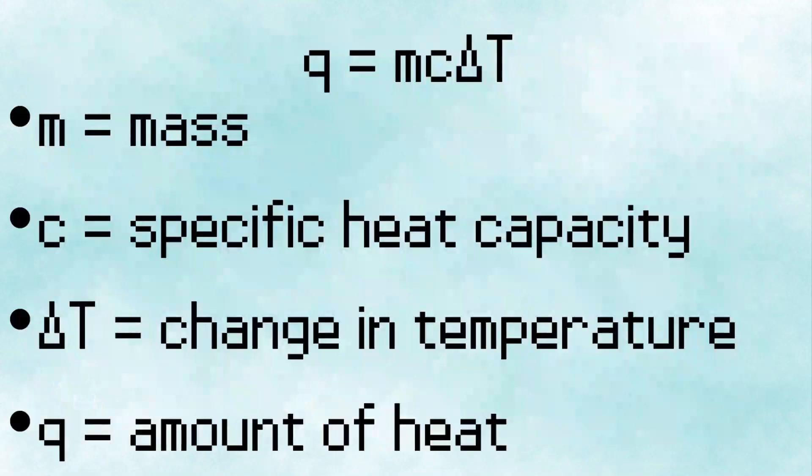So instead of doing one calculation to see how much heat energy is needed to increase Regice's body temperature by 200 degrees, I'll have to do it about 12 times and add the results with a different specific heat each time. And that looks a little something like this.